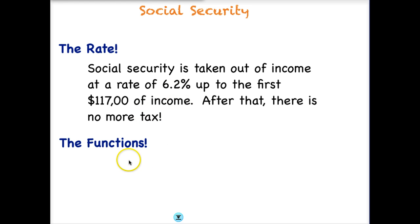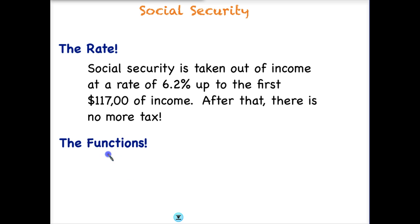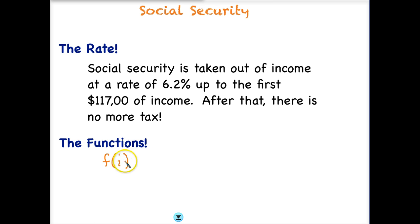If you remember, a function has an output for every input. We're going to write a function using function notation. We typically use F for function notation, and since we're talking about income, I'm going to use F of i. So we have a function with our independent variable being income. Depending upon what our income is, we're going to have to pay a certain tax.